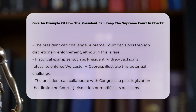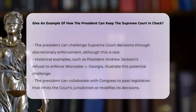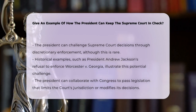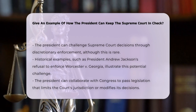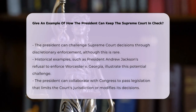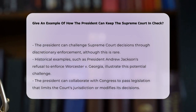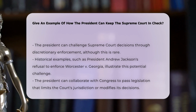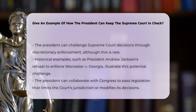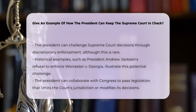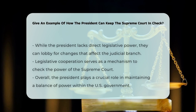Executive discretion in enforcement. While less common, the president can also challenge the Supreme Court's decisions through discretionary enforcement. Historically, there have been instances where the president has chosen not to enforce a court ruling. For example, in the case of Worcester v. Georgia, 1832, President Andrew Jackson refused to enforce the court's decision, leading to its effective disregard. This approach, though not frequently used, highlights the executive branch's ability to question and challenge the court's legitimacy.